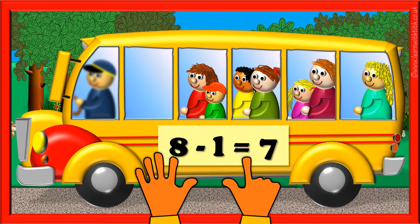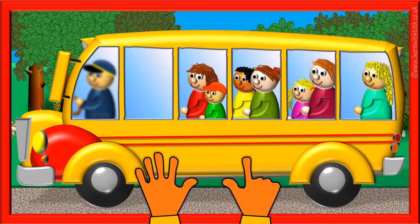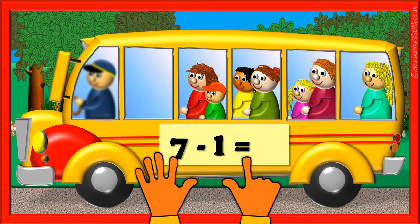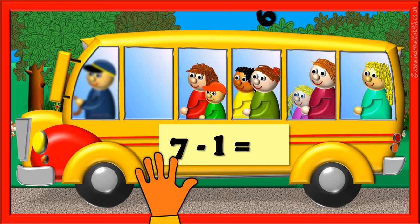And if another passenger gets off the bus, we will have 1 less than 7 passengers left, or 7 take away 1. How many passengers will be on the bus then? Show the answer with your fingers. We will have 6 passengers on the bus.